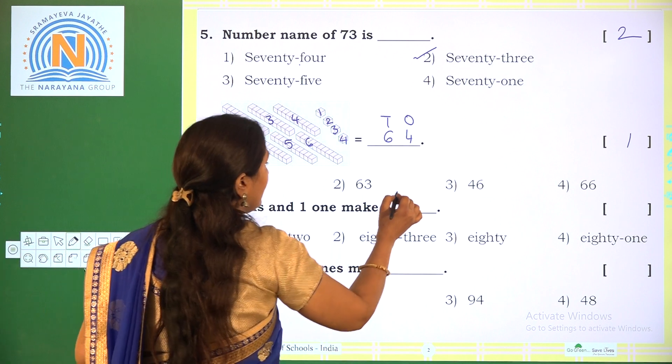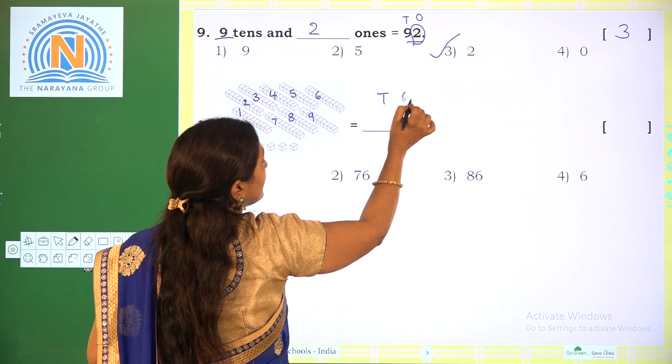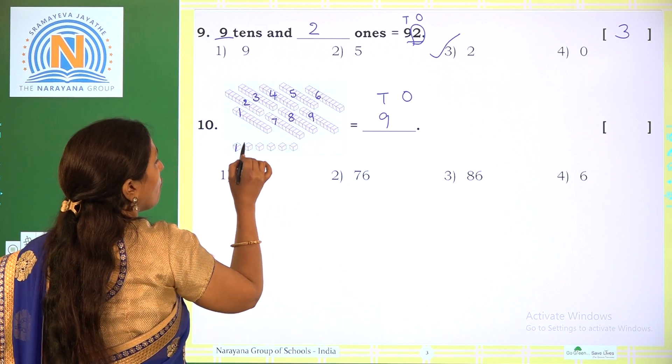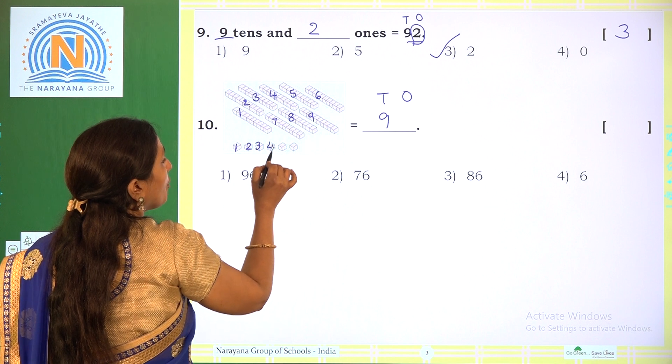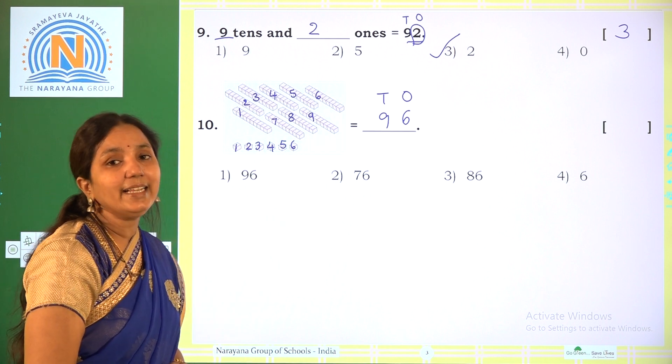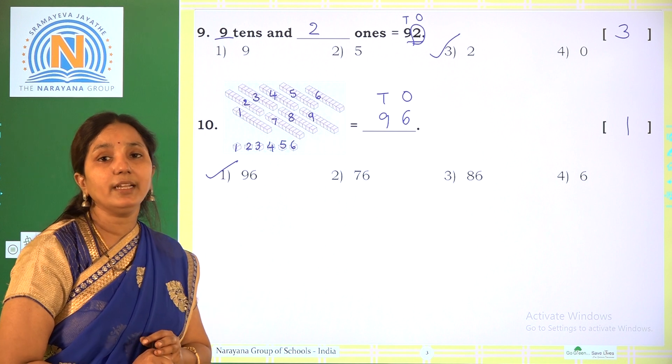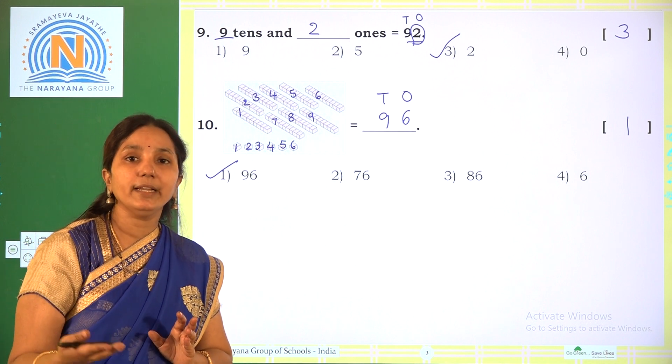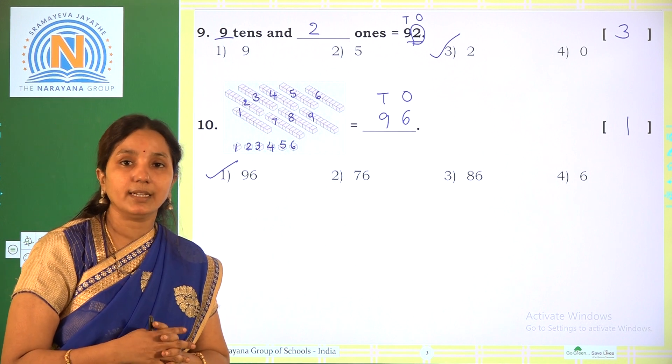Next one. Here blocks are given. Each block contains 10 — so ten ones blocks are there. How many ten-ones blocks are there? 1, 2, 3, 4, 5. Now single blocks are there. How many single blocks are there? 1, 2, 3, 4, 5, 6, 7. So how many tens blocks are there? 5 tens. How many ones blocks? 7 ones. So we get 57. Which is the correct option? Option 3.